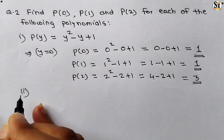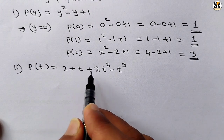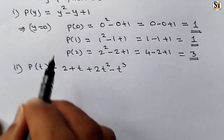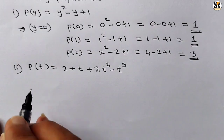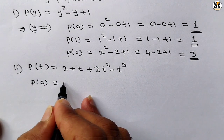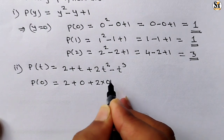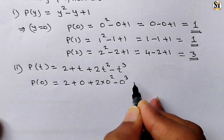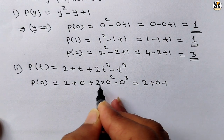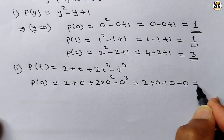Now see the second polynomial: p(t) = 2 plus t plus 2t² minus t³. There are four terms. We have to put the value of t as 0, then 1, then 2. For p(0): put t equal to 0, so 2 plus 0 plus 2 into 0² minus 0³. Multiplying any number with 0 gives 0, so our answer is 2.